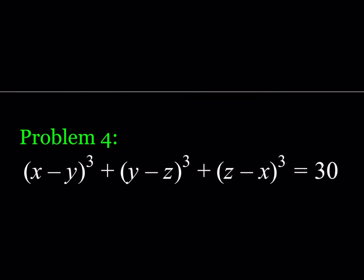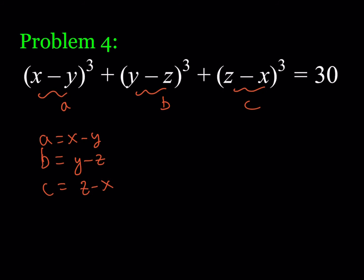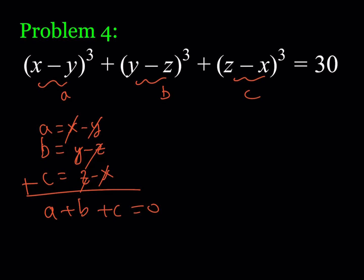Problem 4: we have the sum of three cubes. Let a = x − y, b = y − z, c = z − x. Notice that a + b + c = 0, since everything cancels. We know that if a + b + c = 0, then a³ + b³ + c³ = 3abc. This is because a³ + b³ + c³ − 3abc factors as (a + b + c)(a² + b² + c² − ab − ac − bc), and if a + b + c = 0, the sum of cubes equals 3abc.